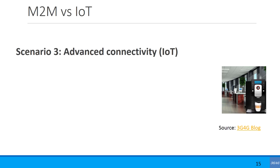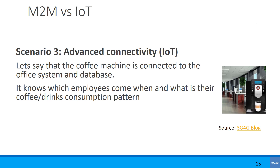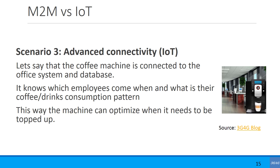Let's evolve this even further — advanced connectivity. The coffee machine is now connected to the office system and an HR database, which knows which employees come at what time and what their drink consumption patterns are. The machines can optimize when they need to be topped up. For example, even if machines are half full in the evening, knowing that a lot of people turn up at eight in the morning means they should be topped up the evening before, so the machines don't run out during the morning rush.